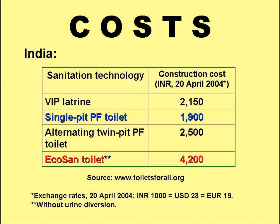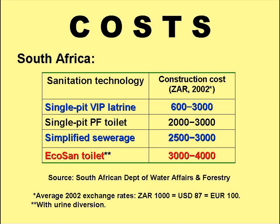One big problem with Ecosan is its costs. Ecosan toilets are more expensive than other on-site sanitation systems, as shown in this slide, which gives construction costs in India as of April 2004. An Ecosan toilet without urine diversion costs over twice as much as a single-pit pour-flush toilet. So why would a poor rural family in India choose an Ecosan toilet? And this slide tells the same story for South Africa: the construction cost of a single-pit VIP latrine in 2002 was much cheaper than an Ecosan toilet with urine diversion, and so presumably rural families would choose the former, not the latter. And high-density peri-urban communities would choose simplified sewerage, not Ecosan, for the same reason.